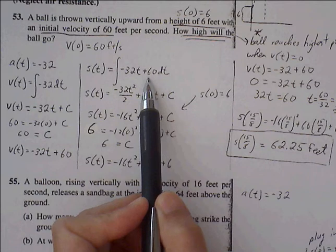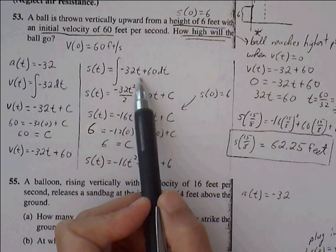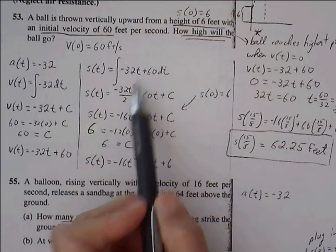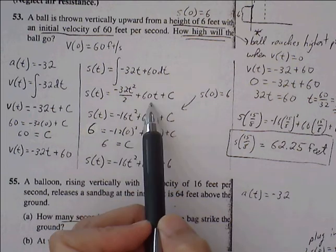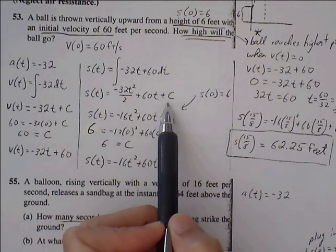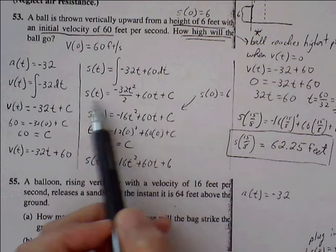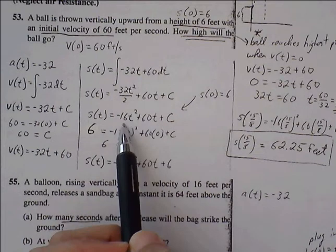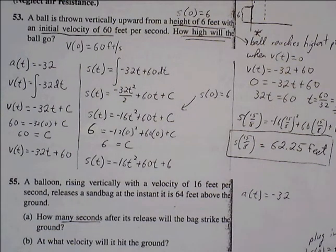We have to go through power rule, so negative 32t becomes negative 32t² over 2, 60 becomes 60 times t, and then we have a plus C. Clean this up a bit, we get negative 16t² plus 60t plus C.